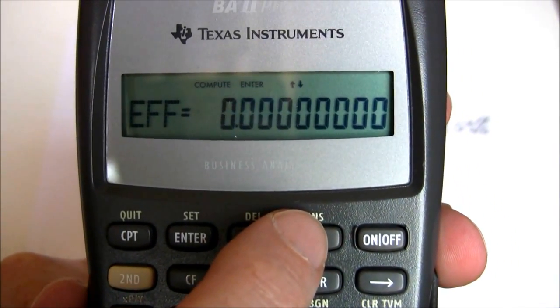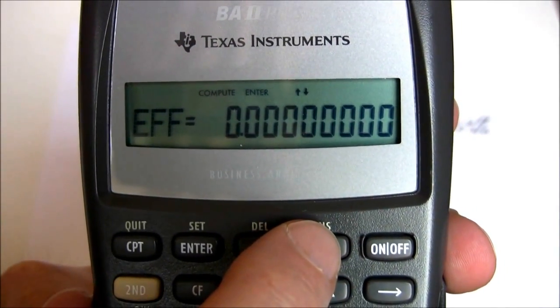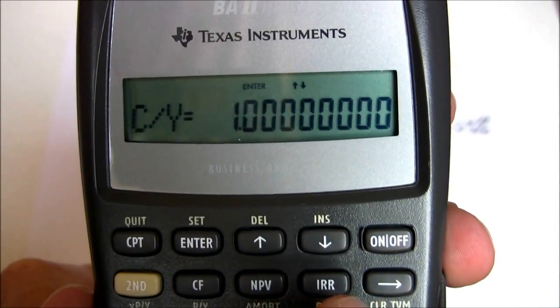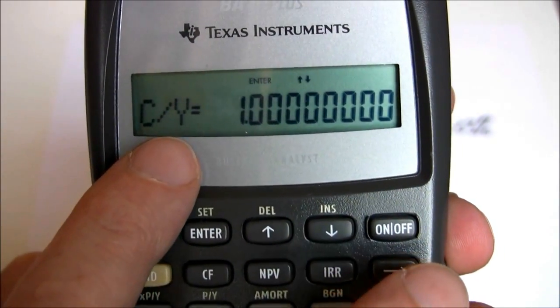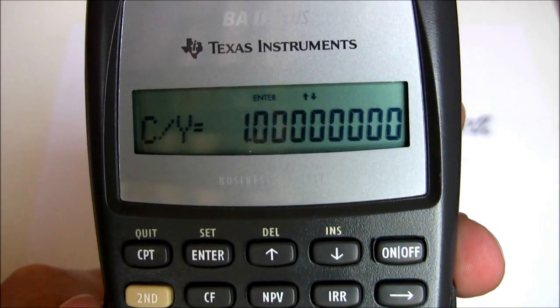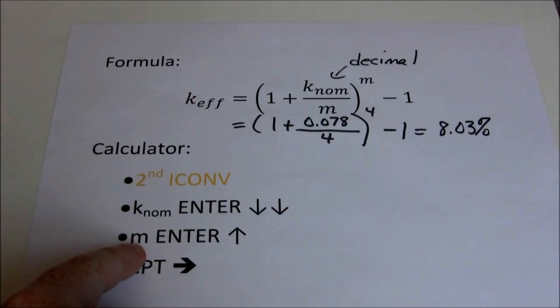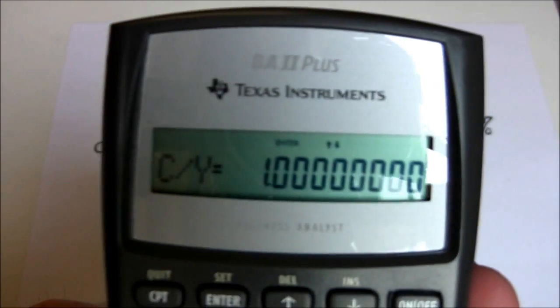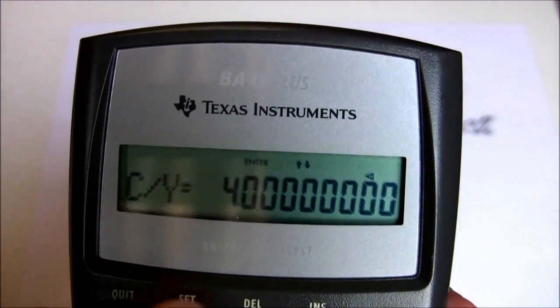Go down 1. You can see now the on-screen display has EFF. That's our final answer. But we don't want to solve for it yet because we've got to tell it how many compounding periods there are. So we press that down arrow twice to get to the C/Y screen. Now it's asking us for the number of compounding periods per year. That's our M. So we put that in. Quarterly is 4. So 4, enter.